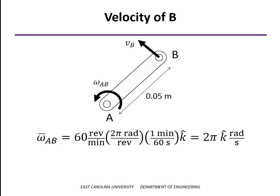To write the omega as a vector at 60 revolutions per minute, we need to change that to radians. Since we want our velocity to come out in meters per second, we need to convert that to radians per second. That ends up being 2 pi radians per second about the positive z axis or in the positive k direction as a vector.